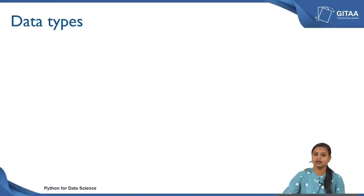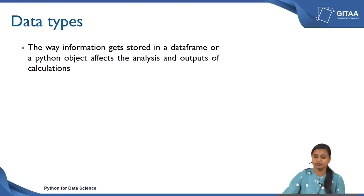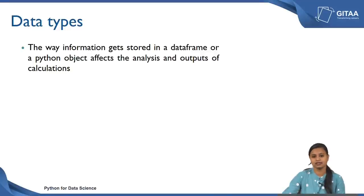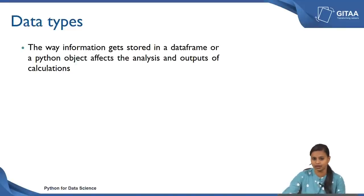First we will look about data types. The way information gets stored in a data frame or in any Python object basically affects whatever analysis you are going to perform, as well as resulting in different forms of outputs from the calculations. For example, you cannot perform any numerical operations on a string. Similarly, you cannot do any string-related operations on numerical data.